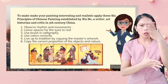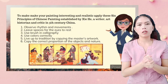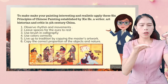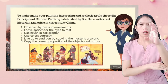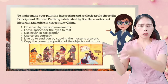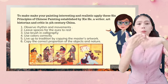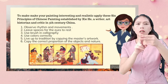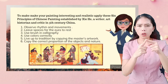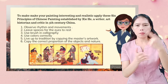To make your paintings interesting and realistic, apply the six principles of Chinese painting established by Xie He, a writer, art historian, and critic in the fifth century in China. Number one: observe rhythm and movements. Number two: leave space for the eye to rest. Number three: use brush in calligraphy. Number four: use colors correctly. Number five: keep up with the tradition by copying the master artworks. Number six: copy the correct proportion of the objects and nature.